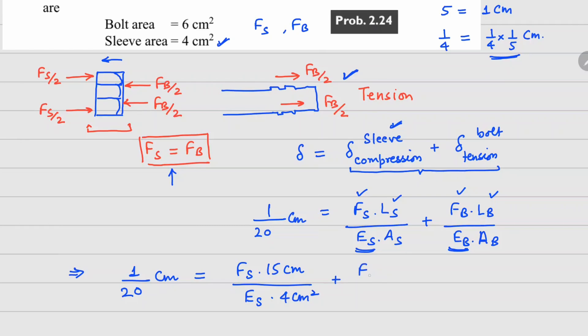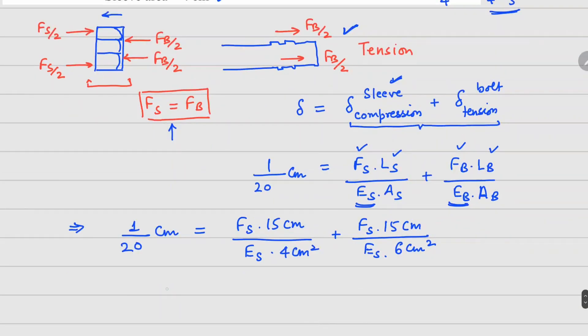Since Fs equals Fb, this again becomes Fs. Length is also 15 cm, E is also the same, but area in the bolt case is 6 cm². From this you can see that only Fs is appearing on the right side, so we can solve for Fs and Fb. Both values are 164 kilonewtons.